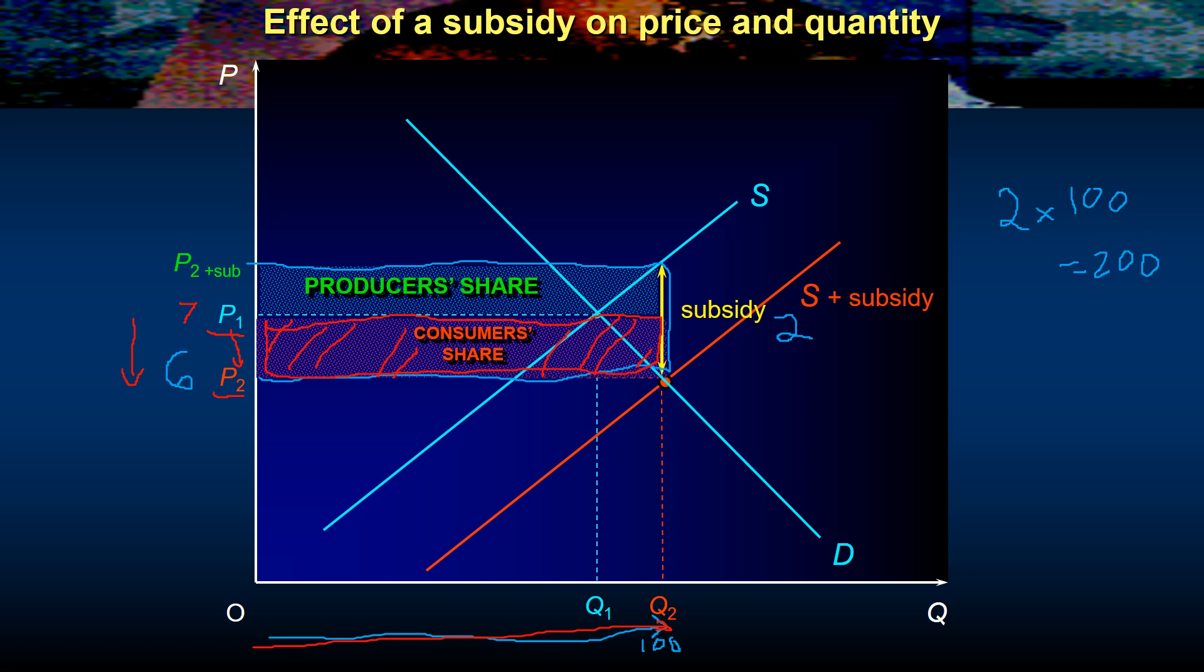So by definition the rest of the subsidy, the remaining amount of subsidy that hasn't been taken up by the fall in price, must be going to the producer. So they are getting again a hundred units worth of this particular value in here, the difference between P1 and P2 plus the subsidy. So this green area at the top here represents the incidence of the subsidy on the producer, the share of the subsidy that goes to the producer of the product.